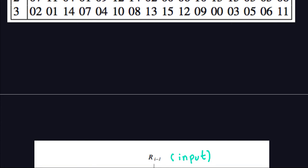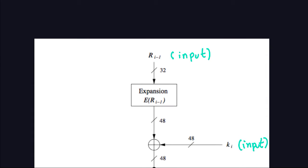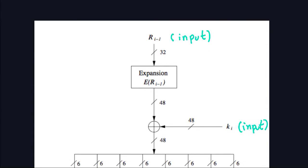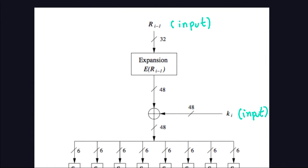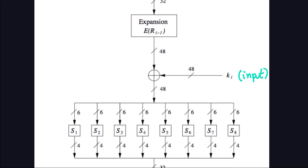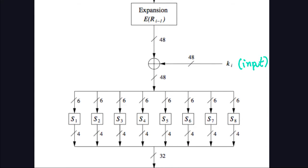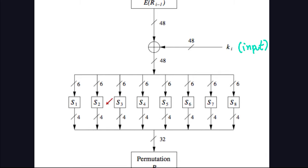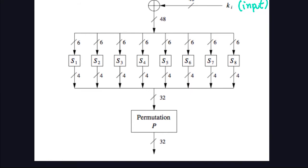Now for the last part, let me look at the picture of the F function again. We've explained all of this already: the expansion permutation — we know how to do it; the S-boxes — we already know what the tables are. The very last part here is the permutation.